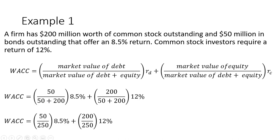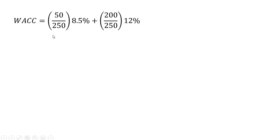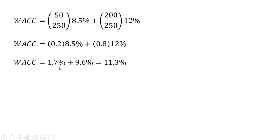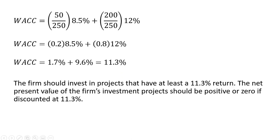Doing the math and simplifying, we get a weighted average cost of capital of 11.3%. The firm should invest in projects that have at least an 11.3% return. The net present value of the firm's investment projects should be positive or zero if discounted at 11.3%.